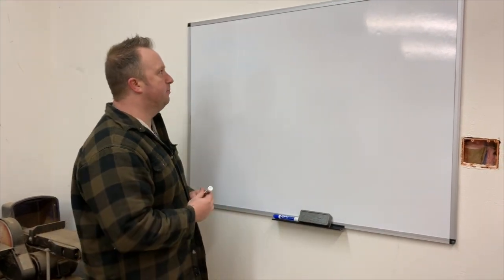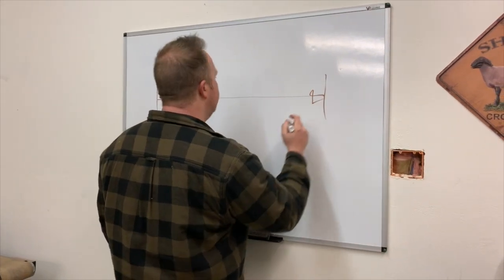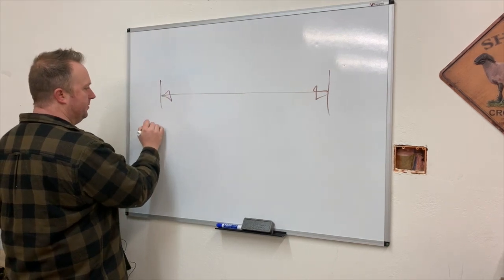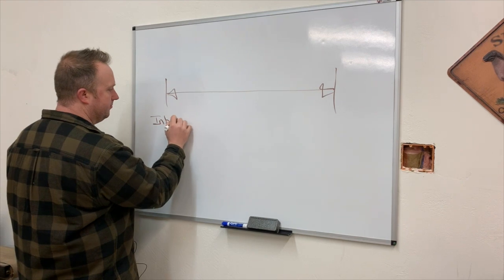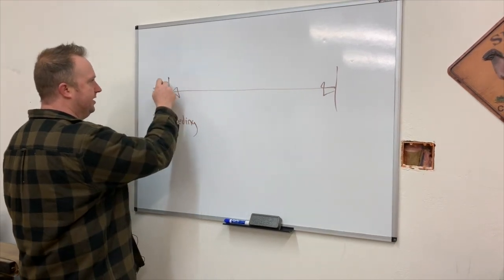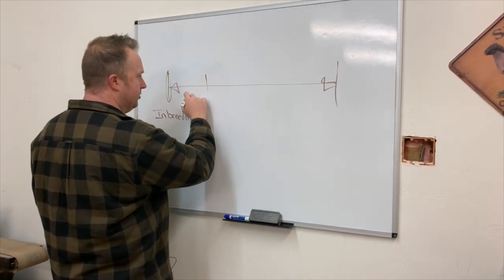So today we're talking about line breeding, inbreeding, and hybrid vigor. On the scale of breeding, we go from one extreme to the other. On this end of the spectrum we would have inbreeding, and down here we would have line breeding.